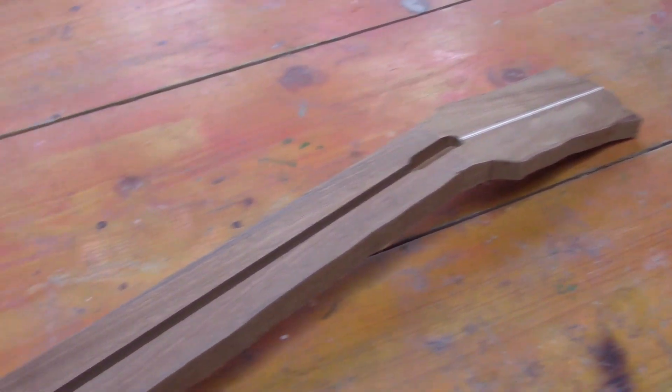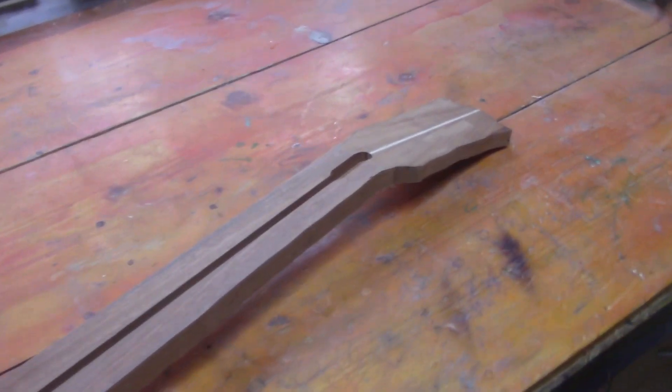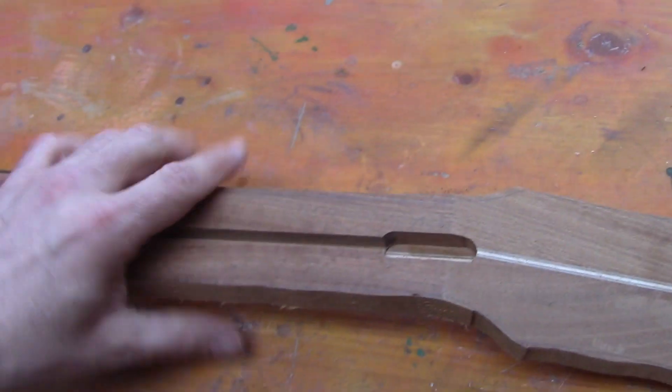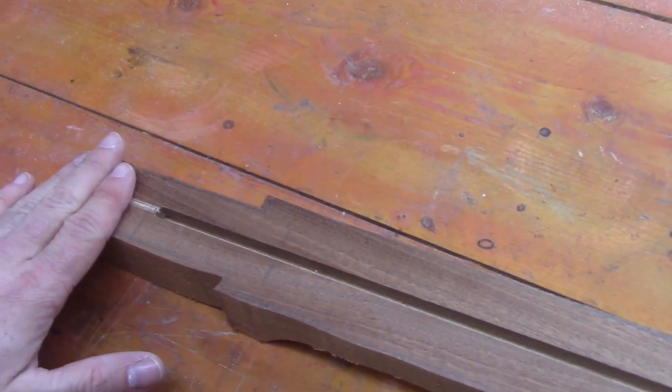With our neck off the band saw now, you can see we're really getting something that's starting to look like a neck. Our next step is going to be to route using our template and get this all perfectly nicely shaped.